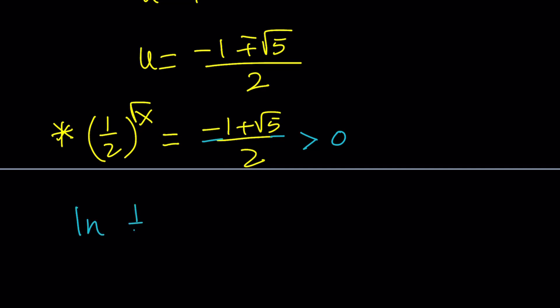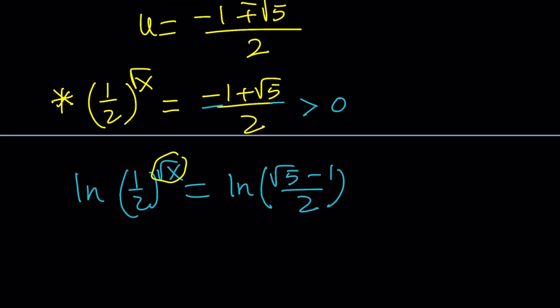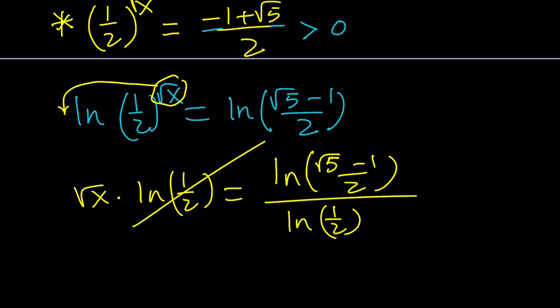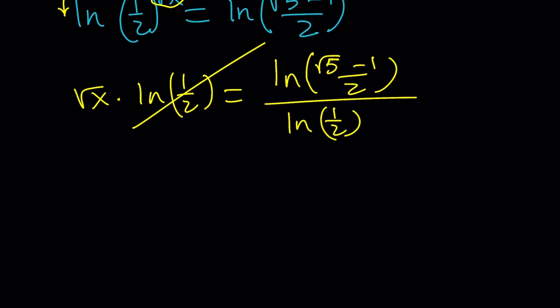Let's ln both sides. ln this equals ln that. Now, we can move this power and write this as square root of x times ln 1 half equals ln root 5 minus 1 over 2. Did you realize why I wrote it that way? Because I'm going to divide both sides by ln 1 half and get the square root of x from there. Now, we're looking for x though. This is square root of x. So, what am I supposed to do? Square both sides.